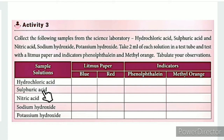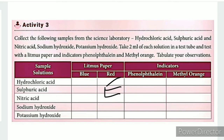Using 5 test tubes with 2 ml of each solution, we will test the first one with litmus paper. Hydrochloric acid shows red color. Sulfuric acid shows red color. Sodium hydroxide and potassium hydroxide show blue color on red litmus paper.